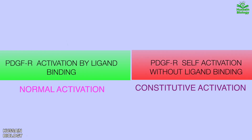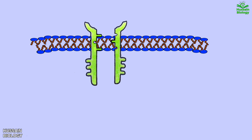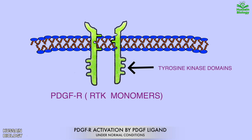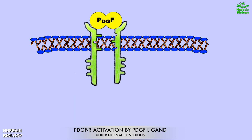Now let's look at the mechanism through animation and see how we get normal activation of the PDGFR receptor and continuous activation of the fused PDGFR receptor separately. First we see signaling under normal conditions with the proto-oncogene. In this diagram we have a plasma membrane on which two monomers of the PDGFR receptor are present. Both monomers have inactive tyrosine kinase domains at the cytoplasmic end. Then a homodimer of PDGF comes in and binds both monomers of the receptor as shown in the diagram.